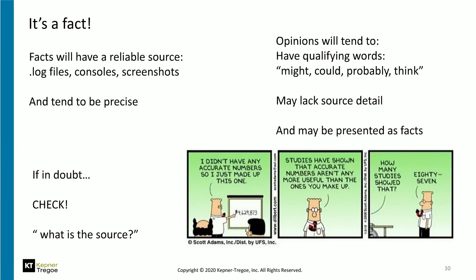Here is a check for facts — I like the Dilbert cartoon for some of these examples. Facts will have a reliable source you can reference: a log file, a console, a screenshot, a picture. Facts will tend to be precise — data from your quality management system or monitoring systems. Opinions, on the other hand, will tend to have qualifying words like 'might,' 'could,' 'probably,' and 'think,' and will probably lack source detail. The danger is they may be presented as facts.